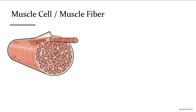Looking at a single skeletal muscle cell, we can see it is long and cylindrical. These cells are some of the longest in the body, as a single muscle cell can extend the entire span of a muscle. This is why skeletal muscle cells have many nuclei — to maintain the cell across such a long distance. Because of their length, they are often called muscle fibers.